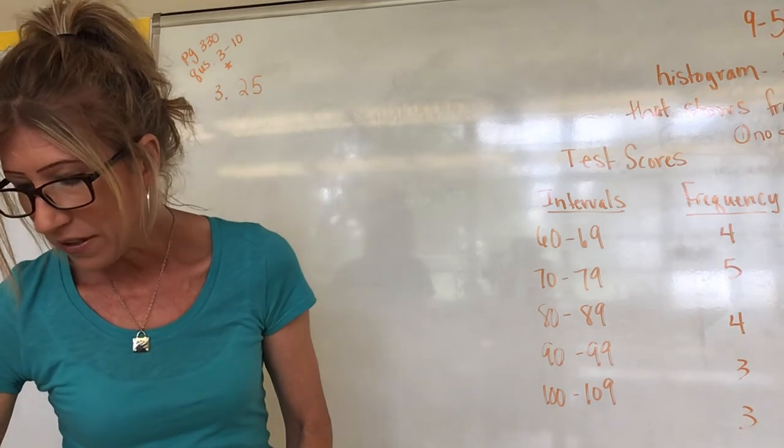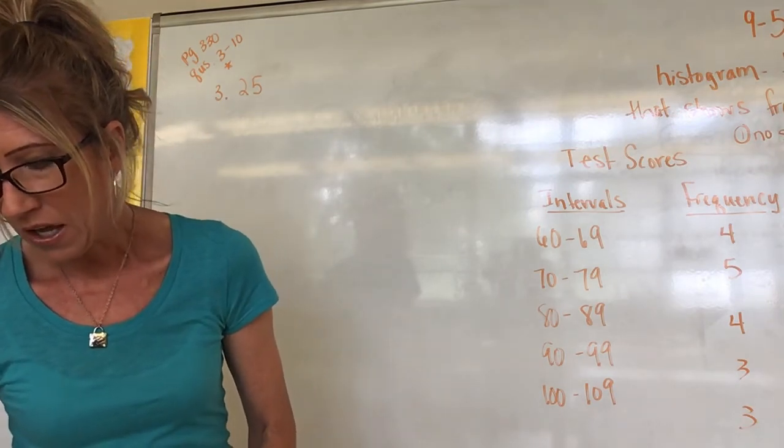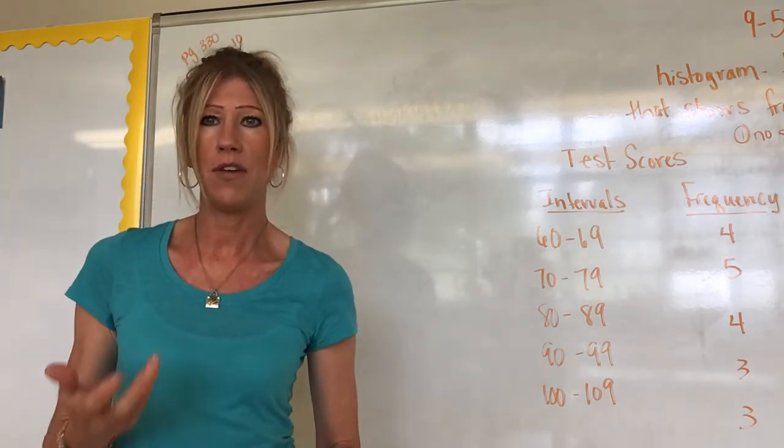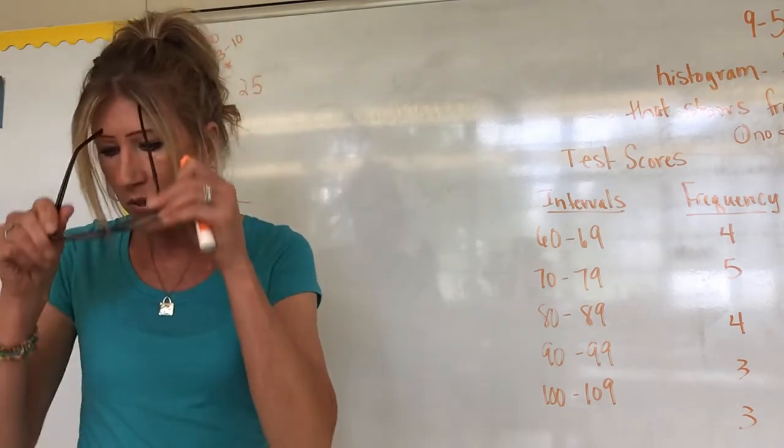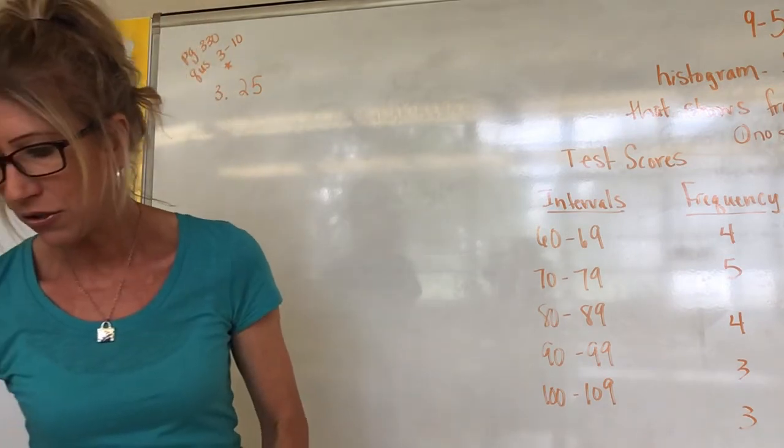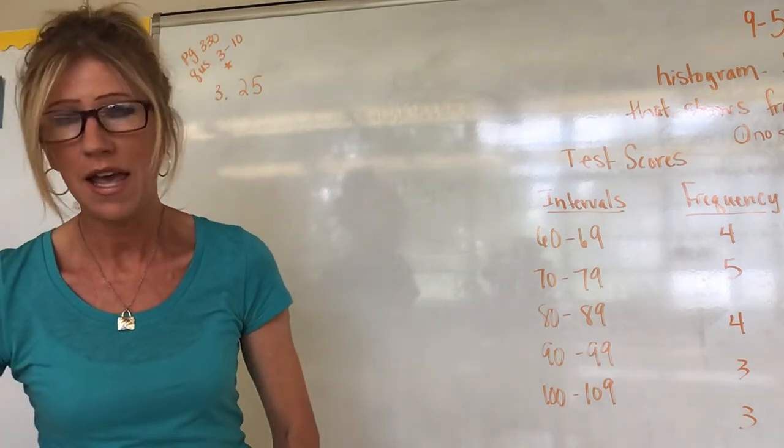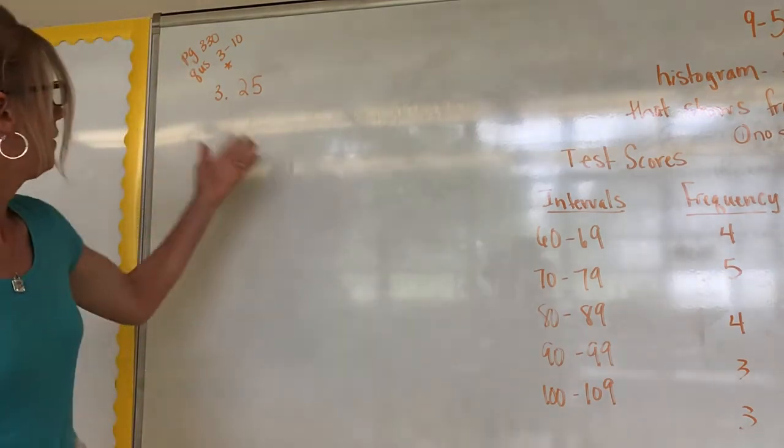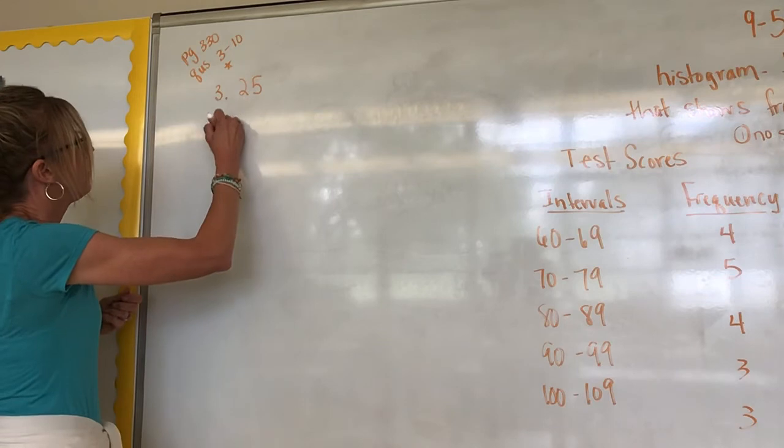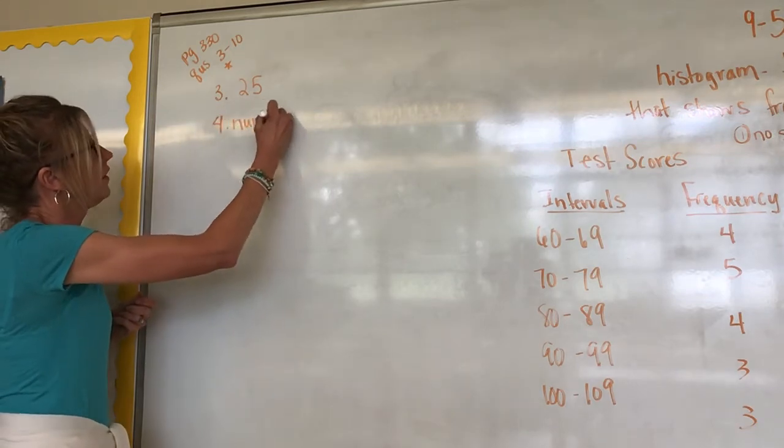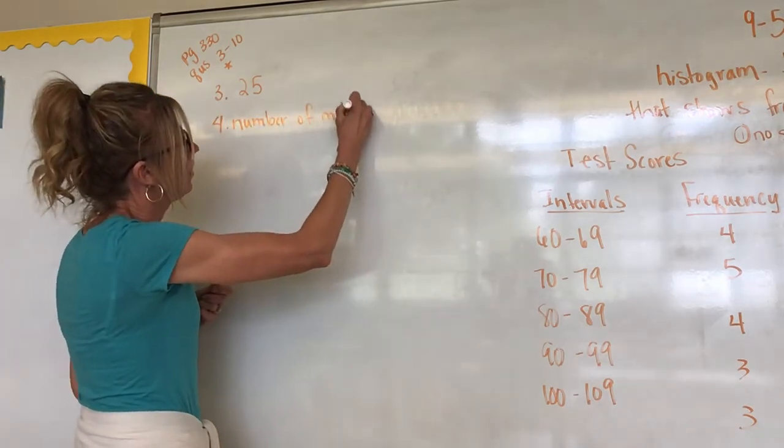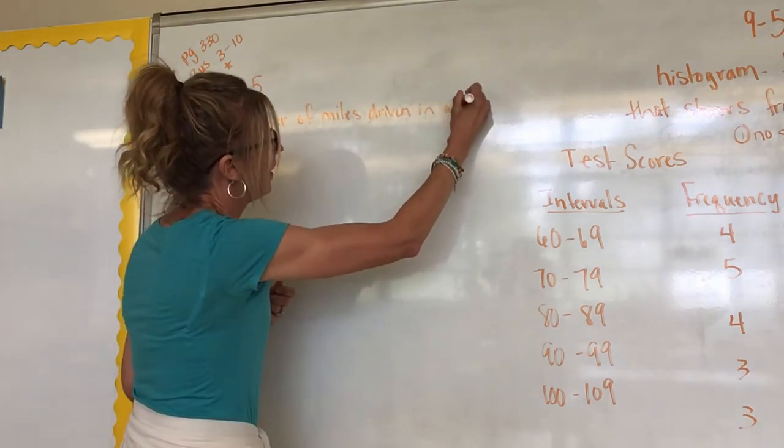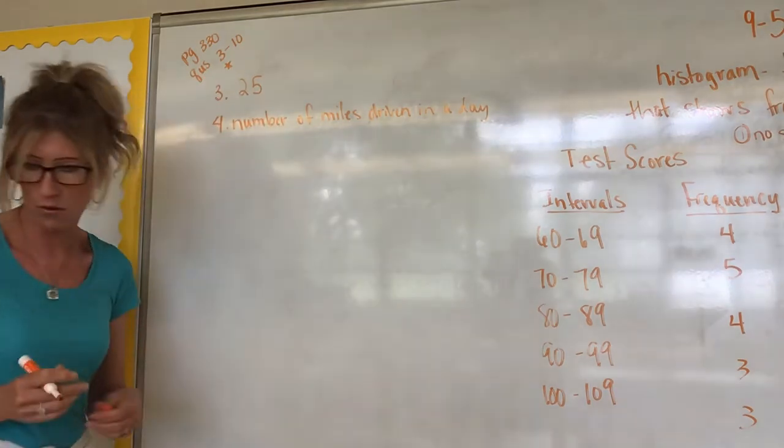Now let's go to number four. What does each observation represent? Every time someone gave you information, they were telling you how many miles they drive in their car. So what are we gathering? We're gathering the number of miles that are traveled in a day, in one day, because this is daily. So number four, let's say number of miles driven in a day.